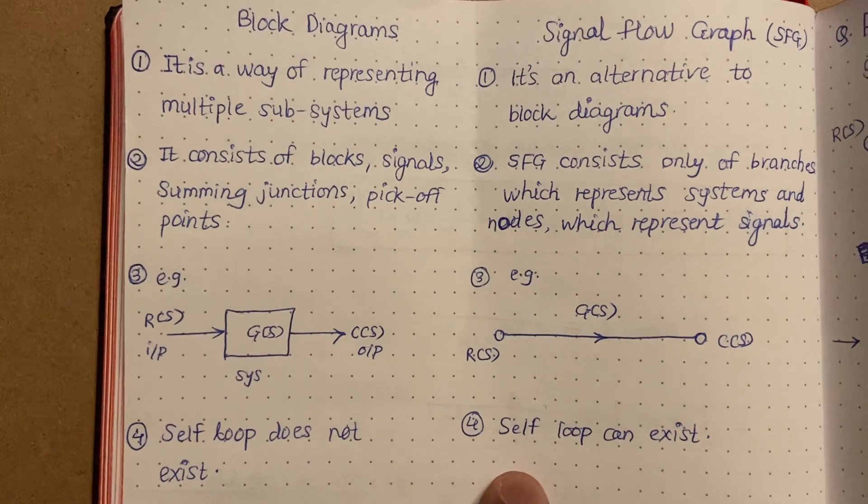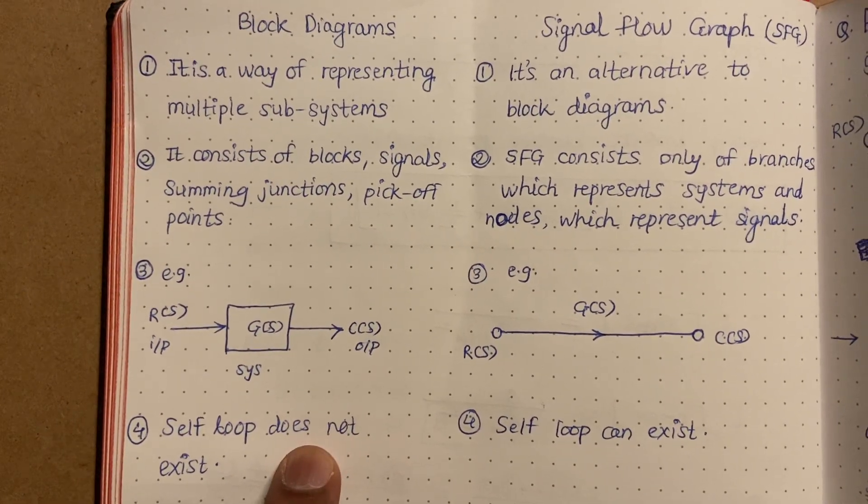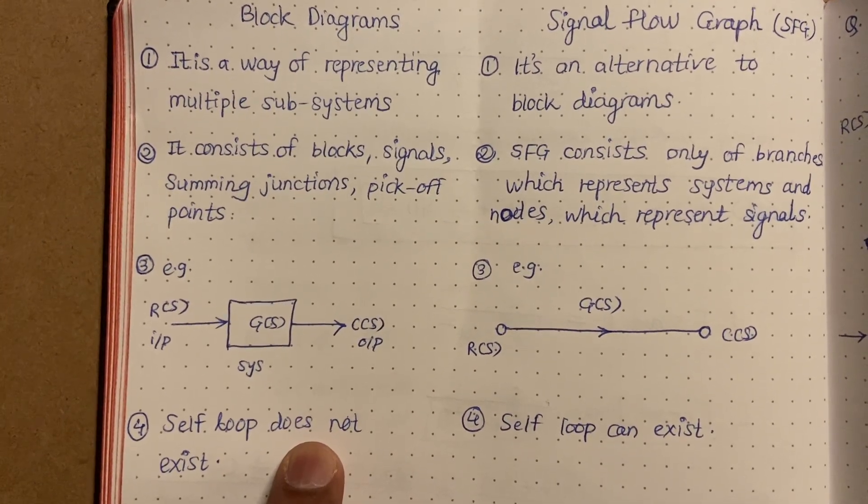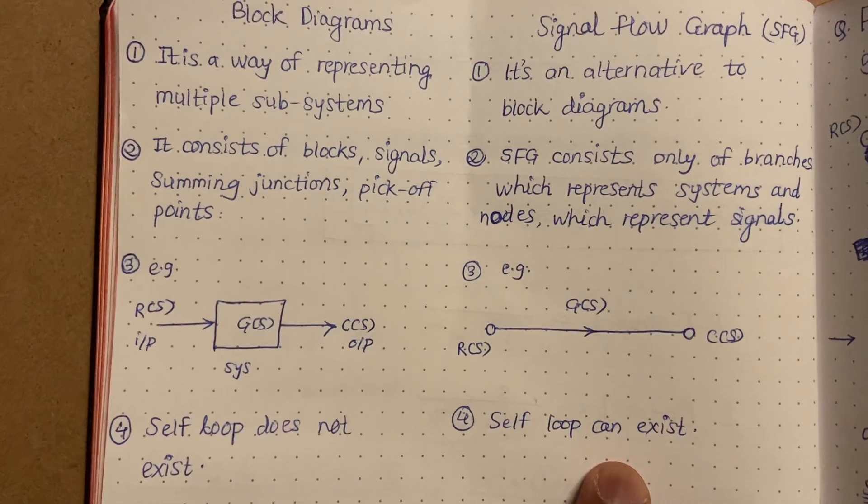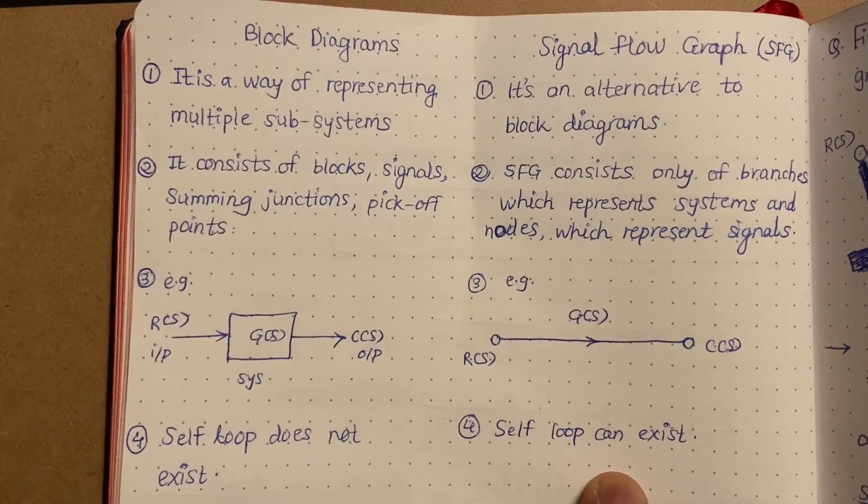What is the next difference? The next difference is very important. It is basically for block diagram, self-loop does not exist, but in case of signal flow graph, self-loop can exist.